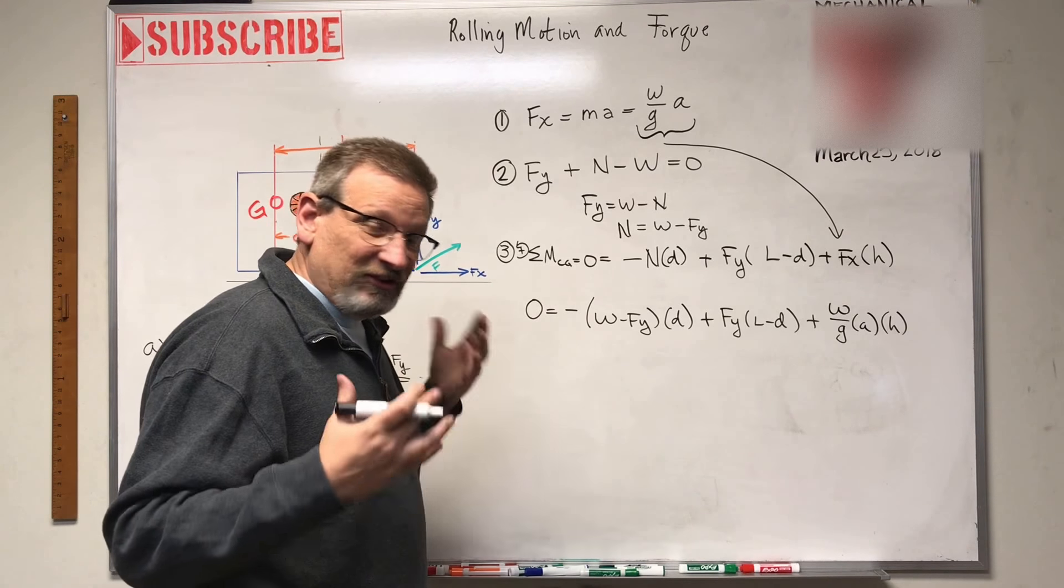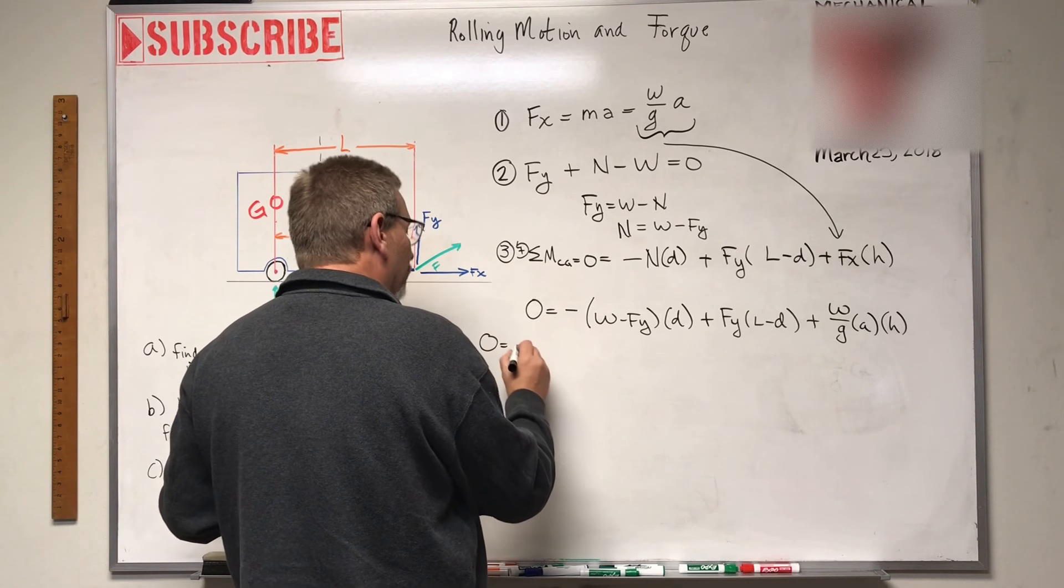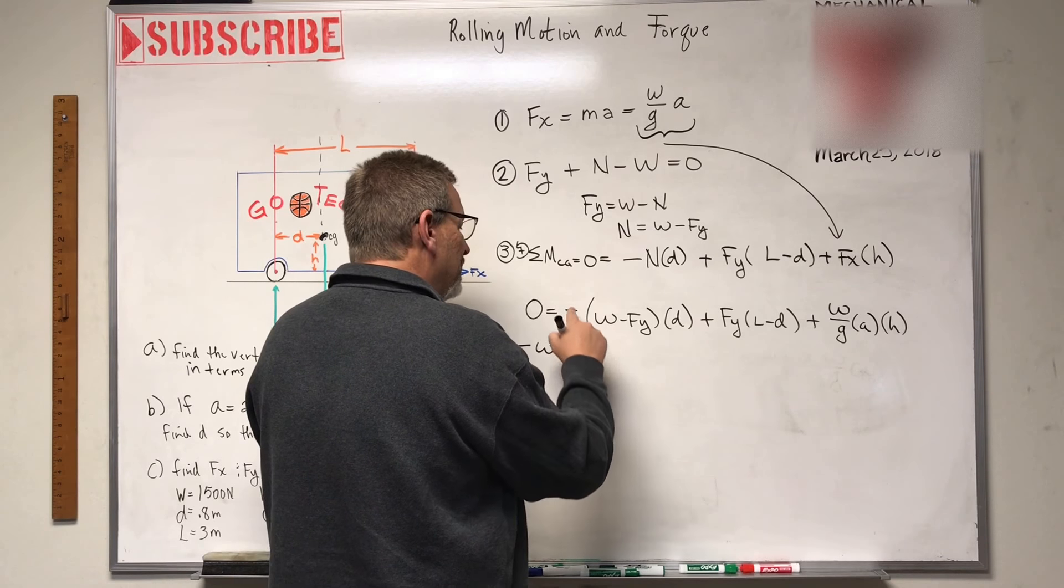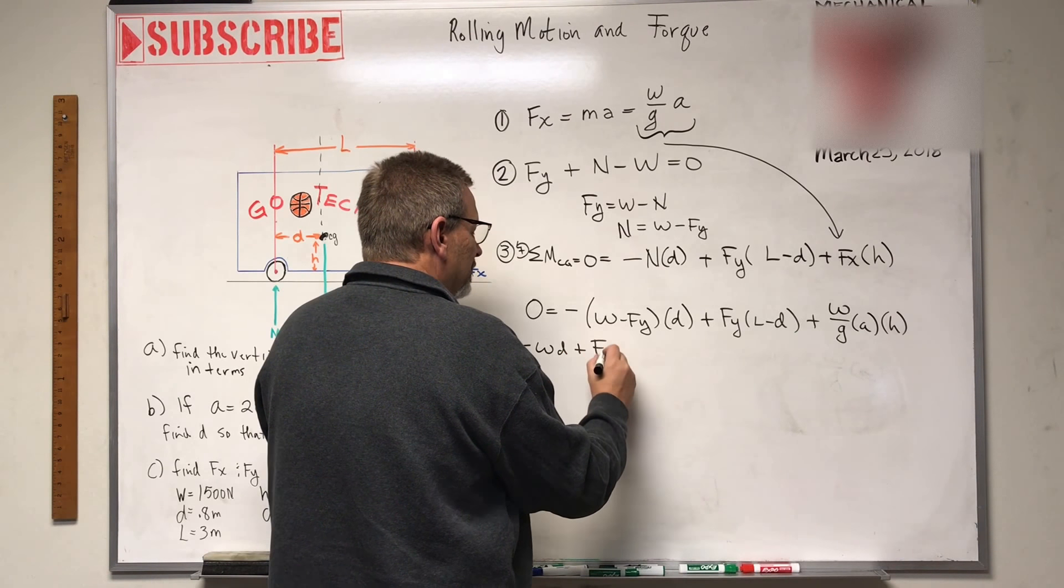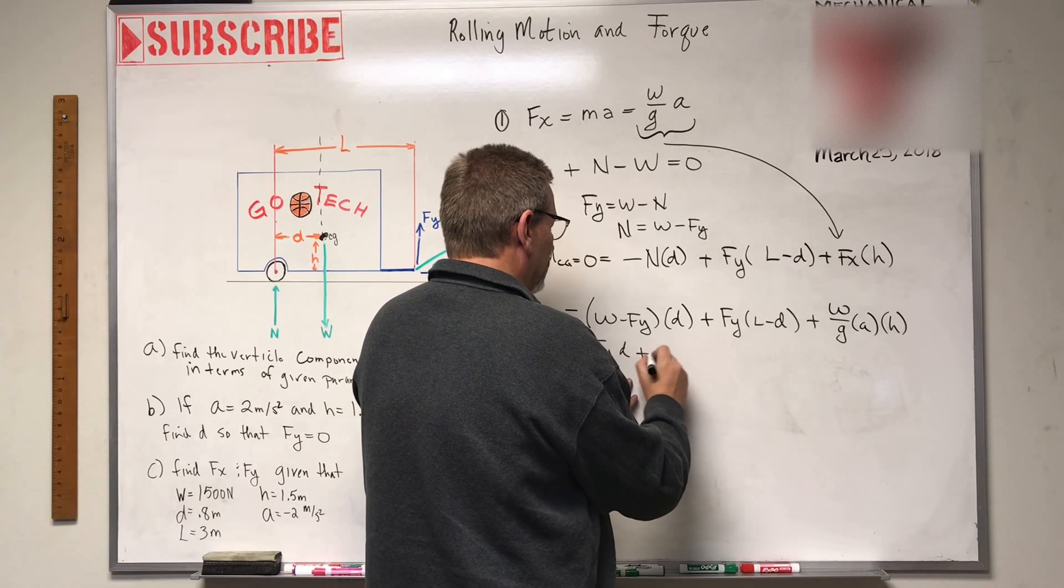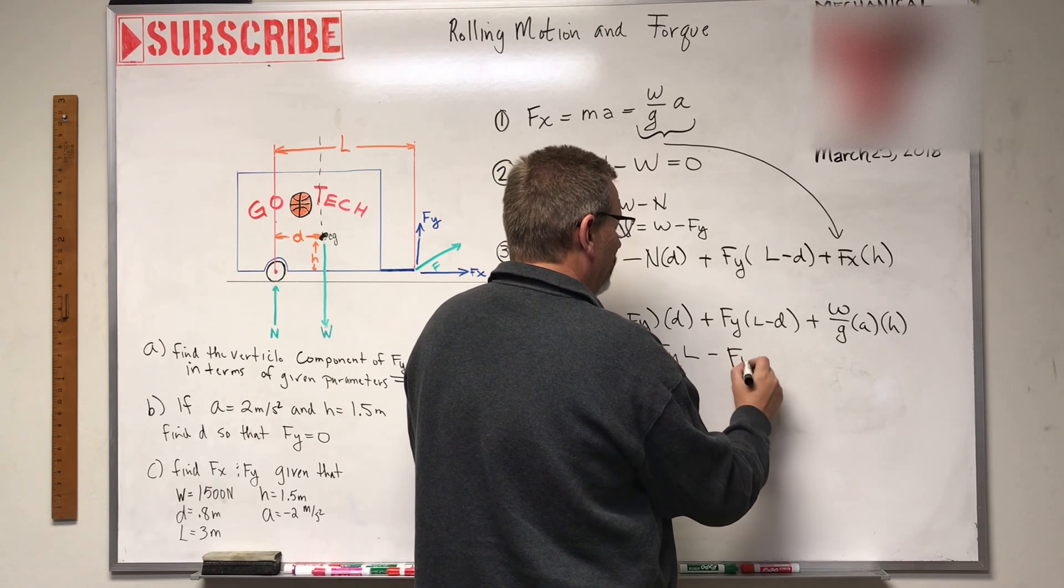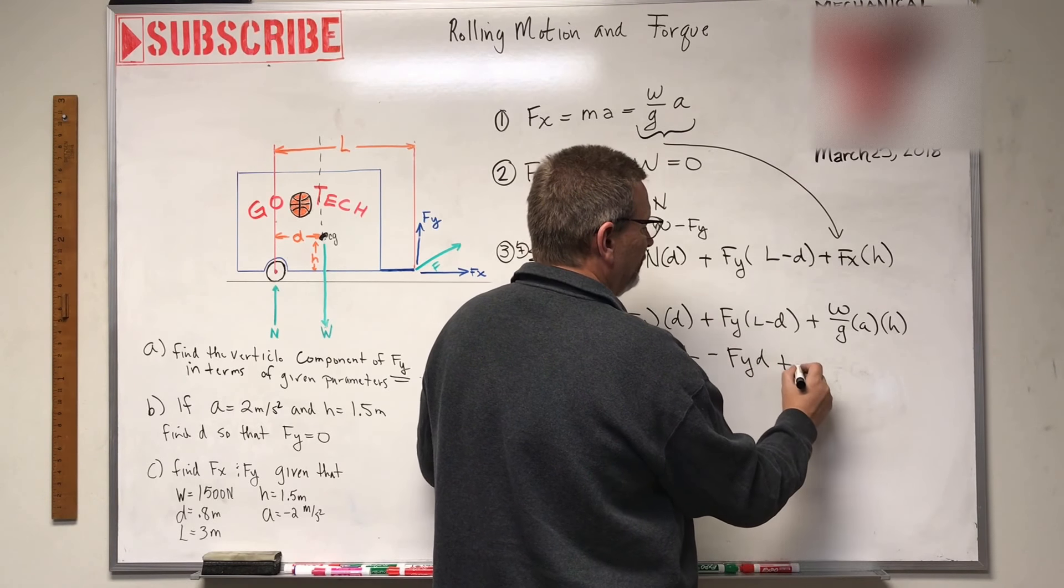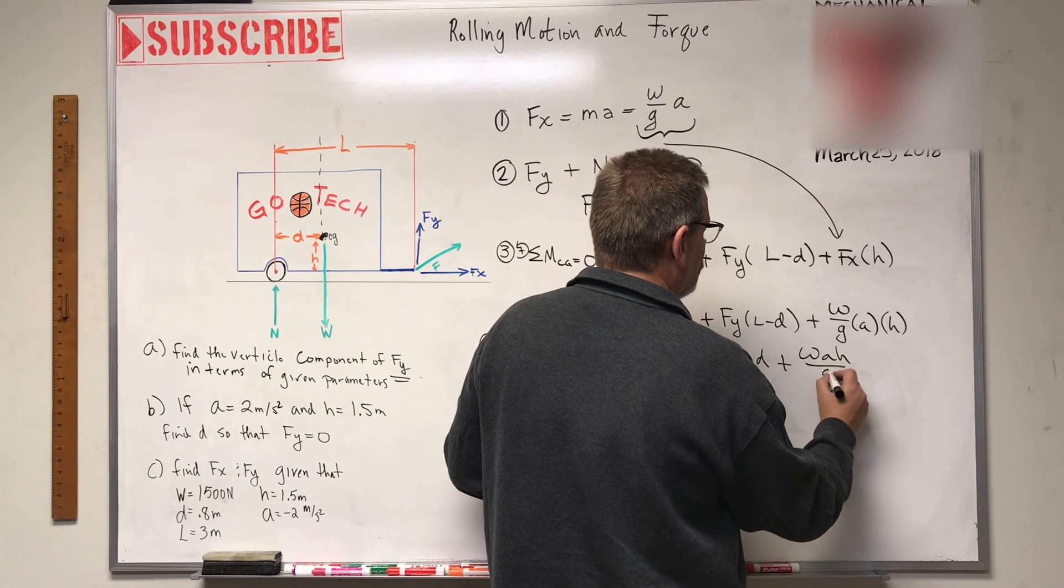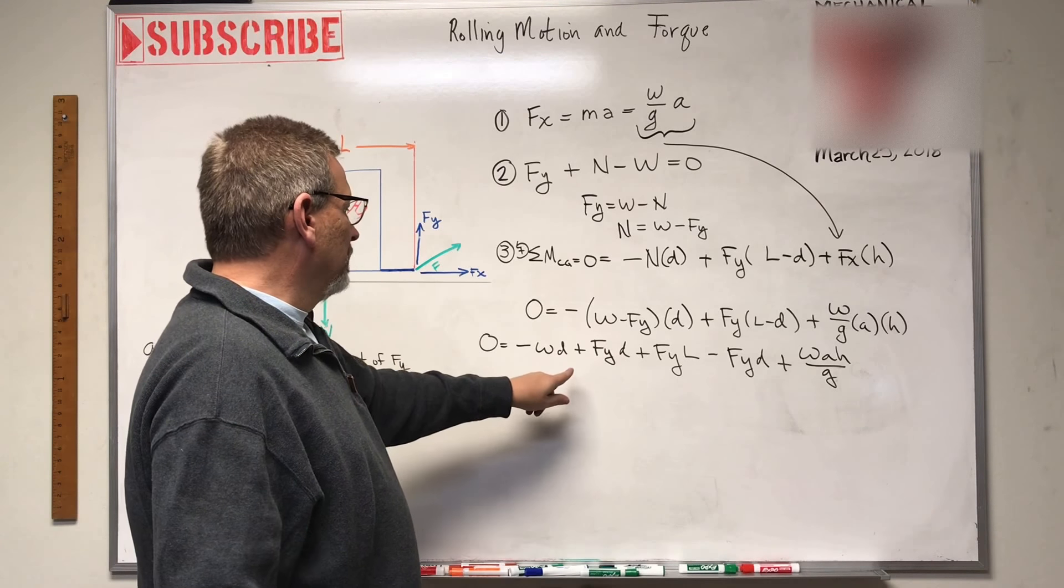Okay. Let's do a little algebra. Let's expand this. And so what do we get? We get minus a zero equals minus WD and then minus a minus is going to turn into a plus plus FyD plus Fyl minus FyD plus let's just call it WAH over G.